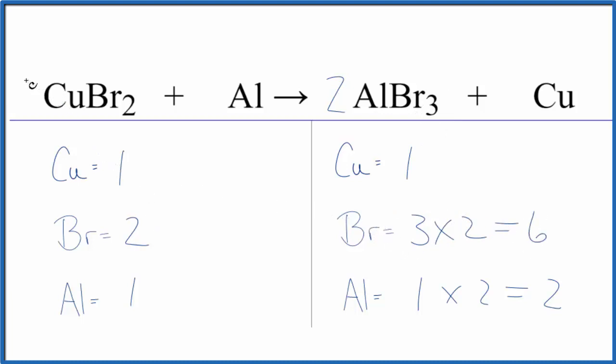Now I could put a three in front of the Copper 2 bromide. So one times three, I have three copper atoms, but two times three, that'll give me six bromine atoms.